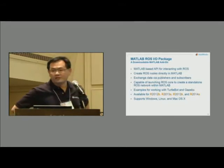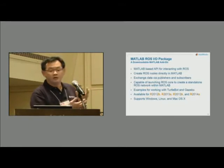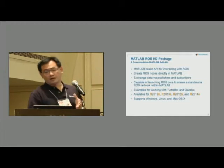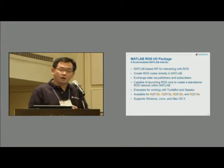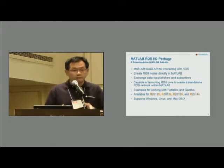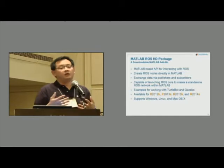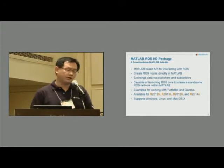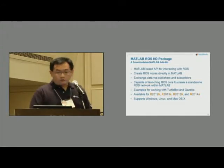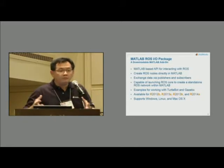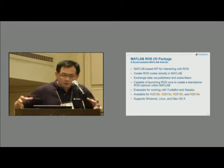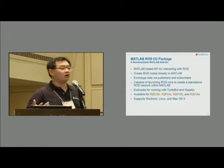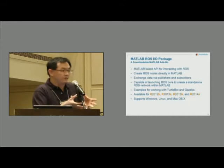The MATLAB ROS IO package is a downloadable package available right now at mathworks.com. It's a set of MATLAB-based APIs intended for users to interact with ROS directly from MATLAB. It allows you to create a ROS node directly in MATLAB and then exchange data with existing nodes — whether in a simulator or an actual robot — using publishers and subscribers. For users who want to create a self-contained ROS network within MATLAB, we also provide the capability to launch a ROS core from MATLAB.